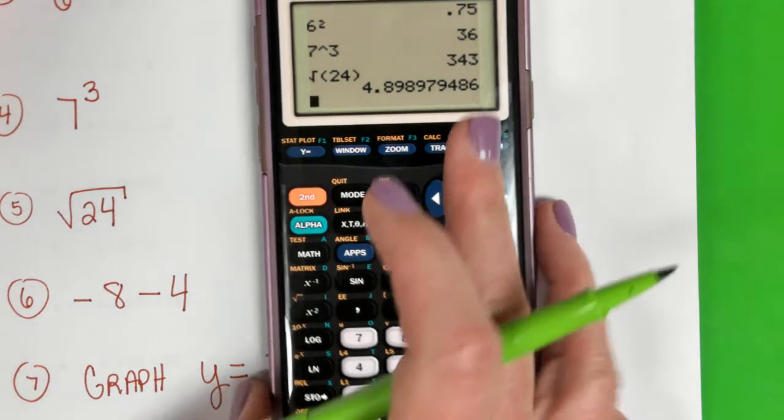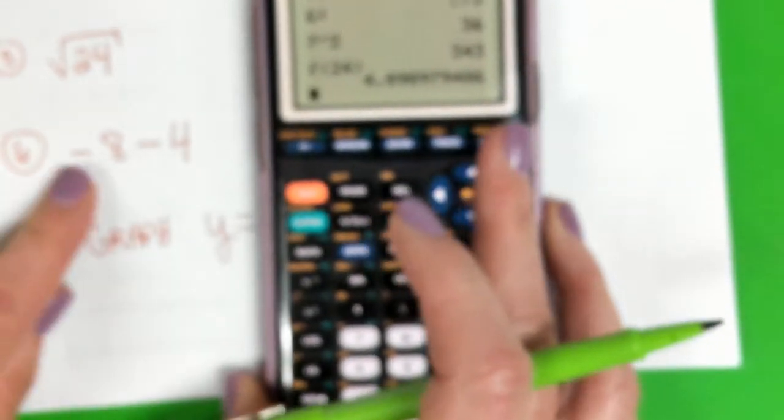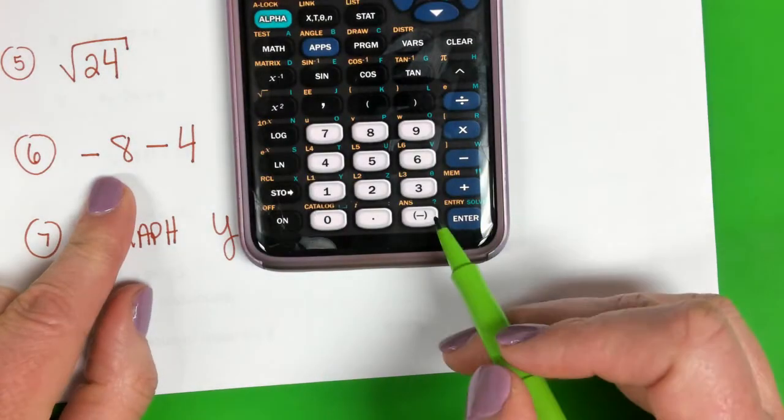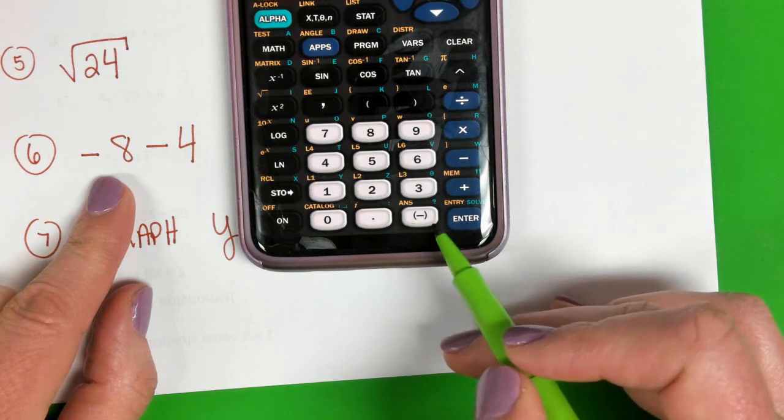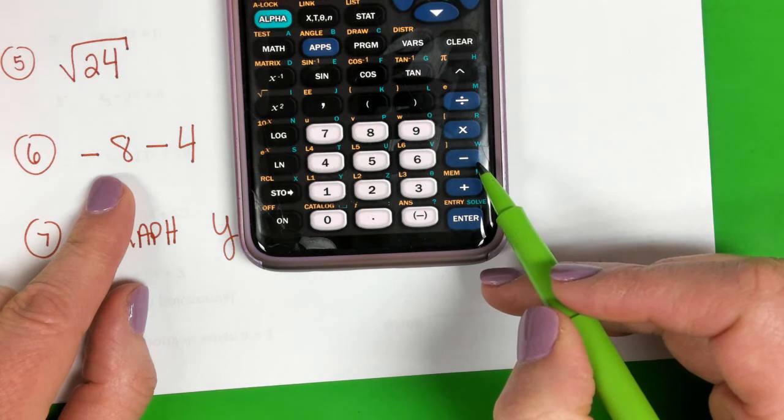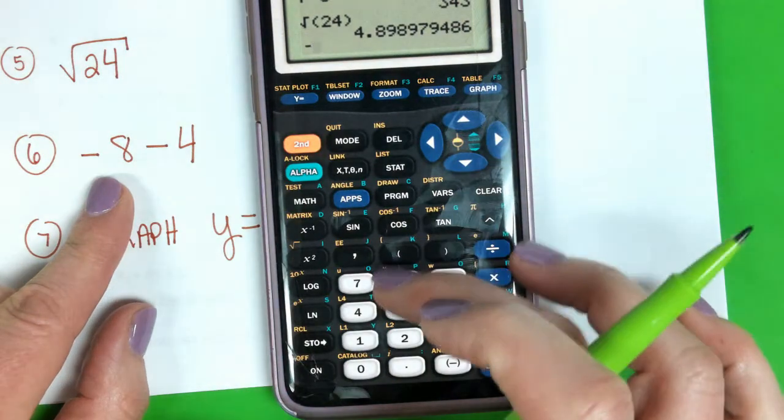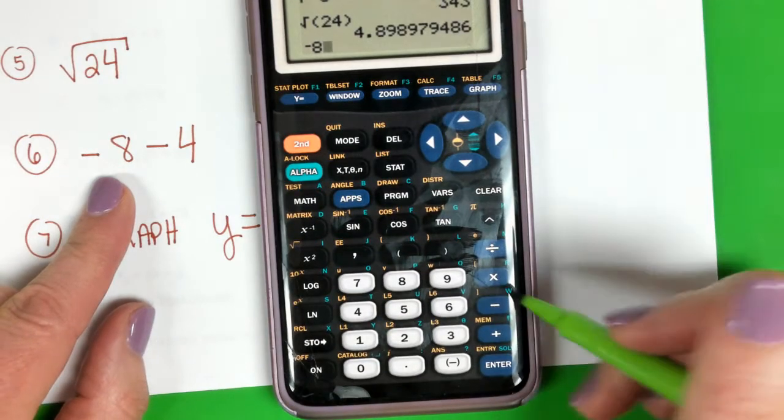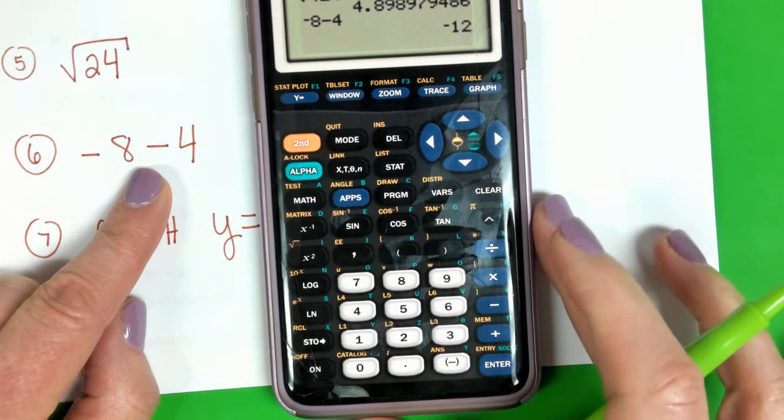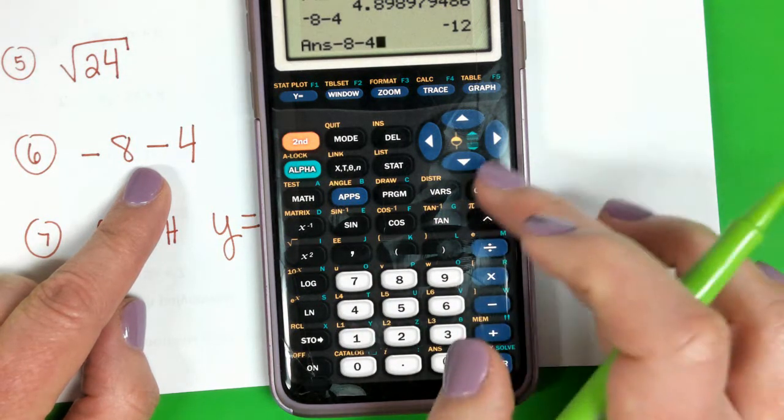Okay, the next thing I'm going to show you is when we type in negatives. So this is -8 - 4. This key down here next to the enter key, this is your negative sign. And then I'm going to use minus when it's in the middle of the problem. So like I would press negative 8, and then the minus key, minus 4, and then hit enter. What I want you to see is if you use the minus key—like let's say I say minus 8 minus 4—I don't want to do that.